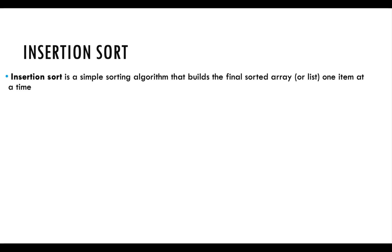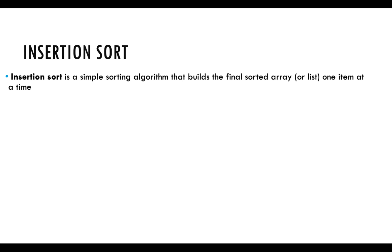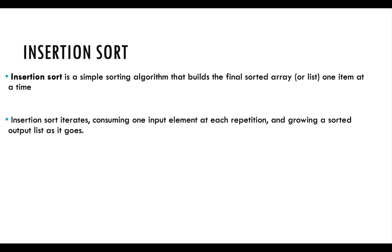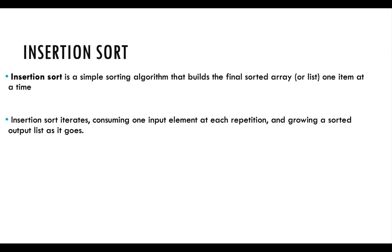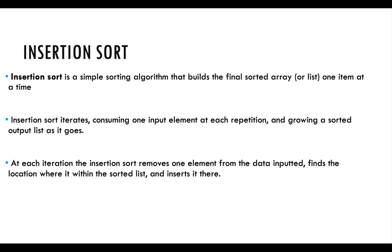The insertion sort is a simple sorting algorithm that builds a final sorted array or list one item at a time. It iterates, consuming one input element at each repetition and growing a sorted output list as it goes, making it faster than the bubble sort. At each iteration, it removes one element from the input, finds the location within the sorted list, and inserts it in the correct location until no elements remain to be sorted.